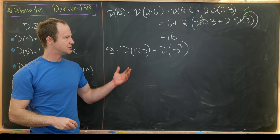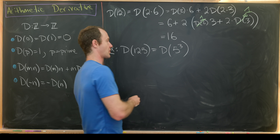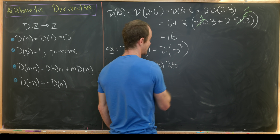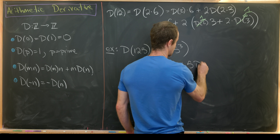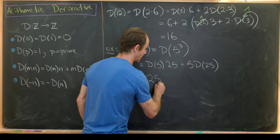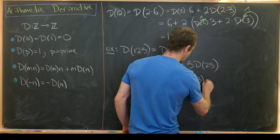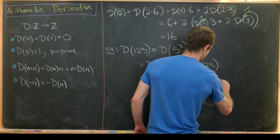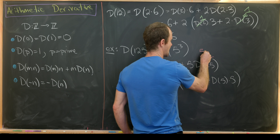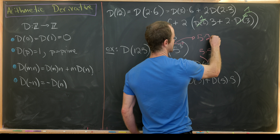We can use our Leibniz rule a couple of times to break this down to the prime 5. First, write d(5·25) as d(5) times 25 plus 5 times d(25). d(5) is 1 so that gives us 25, plus 5 times — then we split 25 into 5 times 5 using the Leibniz rule again, whereas 5 cubed was split into 5 times 25.